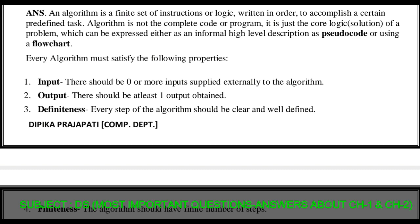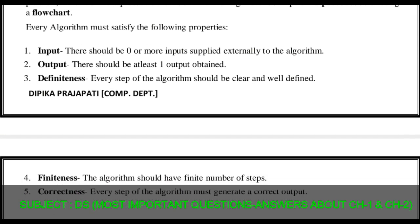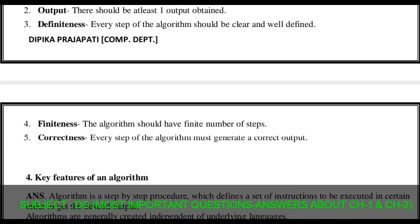Input: there should be zero or more inputs supplied externally to the algorithm. Output: there should be at least one output obtained. Definiteness: every step of the algorithm should be clear and well defined. Finiteness: the algorithm should have a finite number of steps. Correctness: every step of the algorithm must generate the correct output.